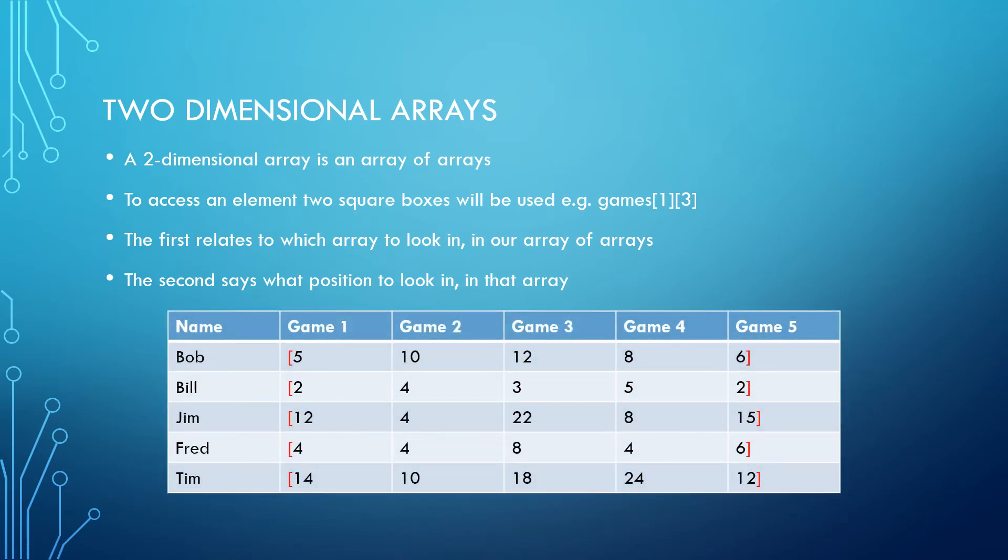If we look at the example, the first square box would contain the number that determines which array to look in. The first array, array zero, is Bob's array of scores. In array one, we have Bill's scores. In array two, Jim's. Fred is in three. Tim is in four.